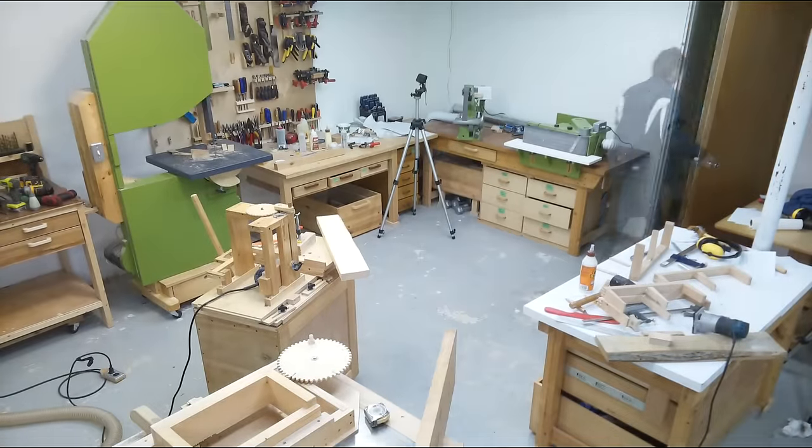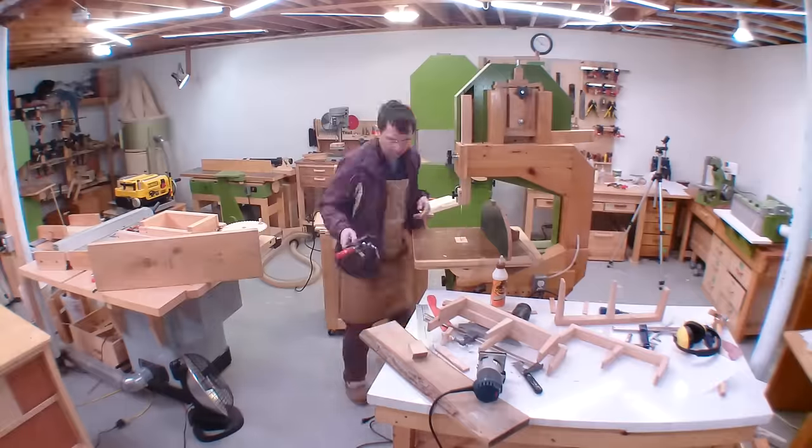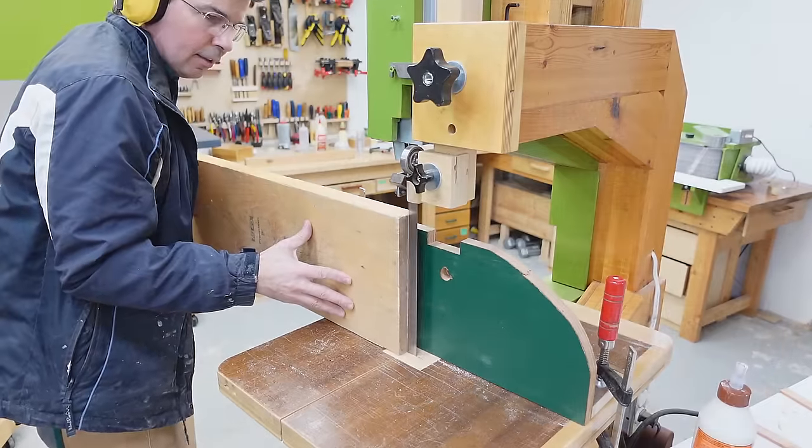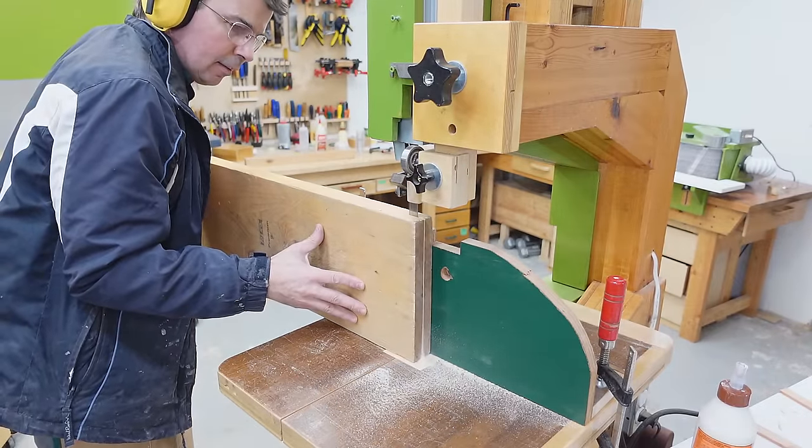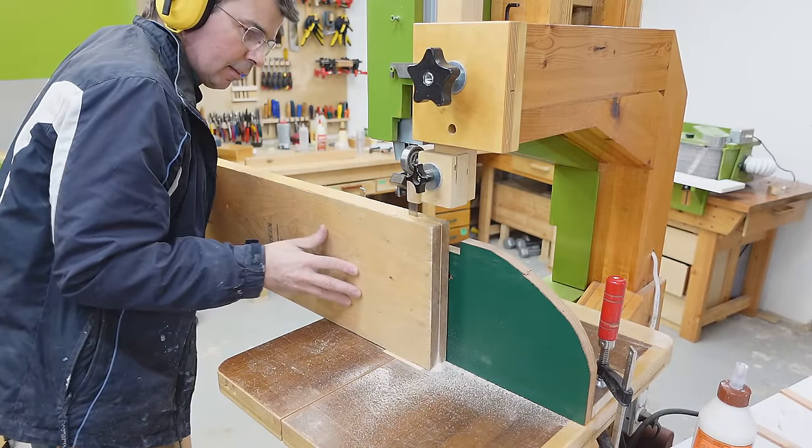Looking around the shop for what to use for the shelves I found this piece of 2x10 which was actually just the perfect dimensions so I just need to slice that down the middle to make two boards for the shelves.